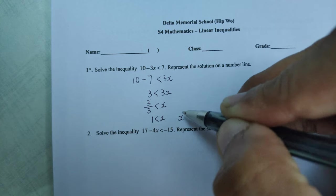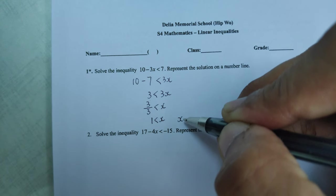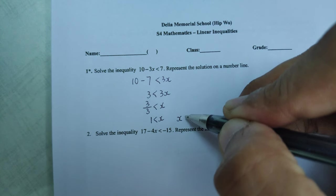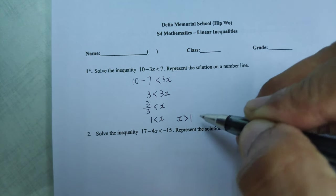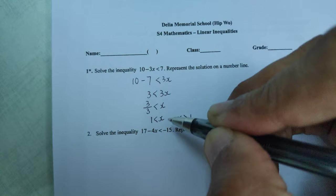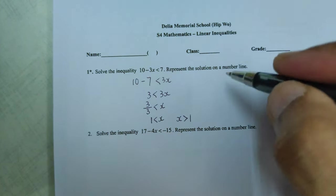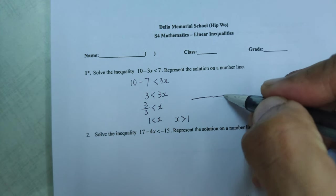But we would like to rearrange it back so that the unknown is back on the left-hand side. So x is greater than 1. You can see it's the same thing but it's rewritten with the x term on the left-hand side. And after that, we'll just draw the number line.